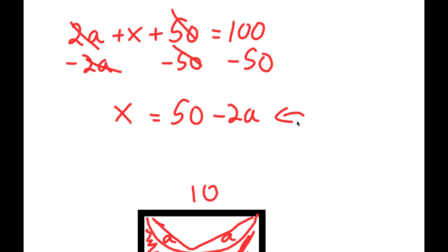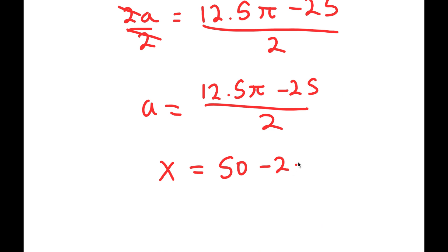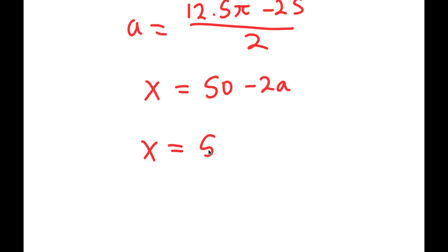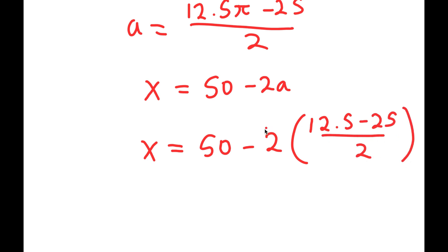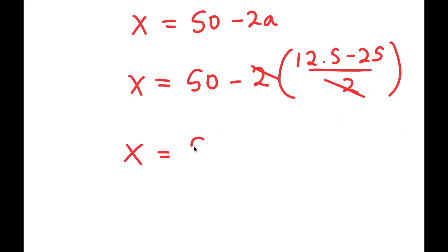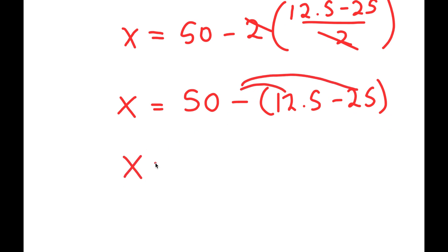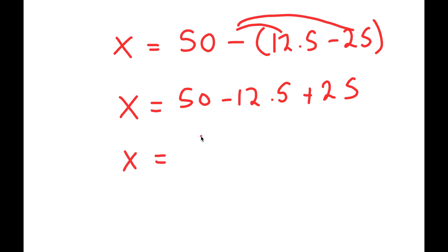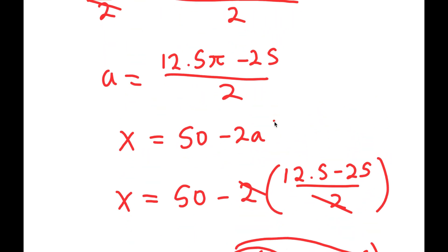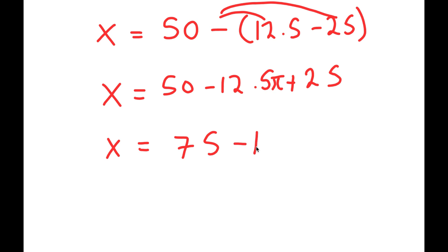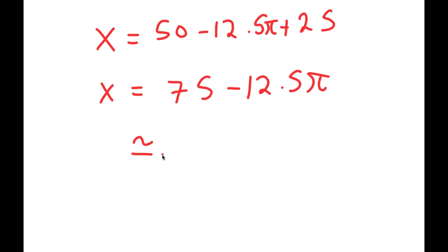Now I can plug this back into my expression for x, which is 50 minus 2a. Plugging in the value for a, I get x equals 50 minus 2 times (12.5π minus 25) over 2. This simplifies to x equals 50 minus 12.5π minus 25. Distributing the negative sign gives x equals 50 plus 25 minus 12.5π, which is 75 minus 12.5π, approximately equal to 35.73 square units.